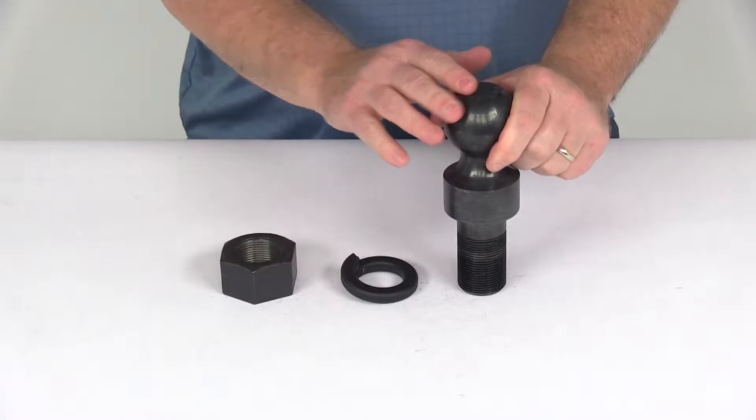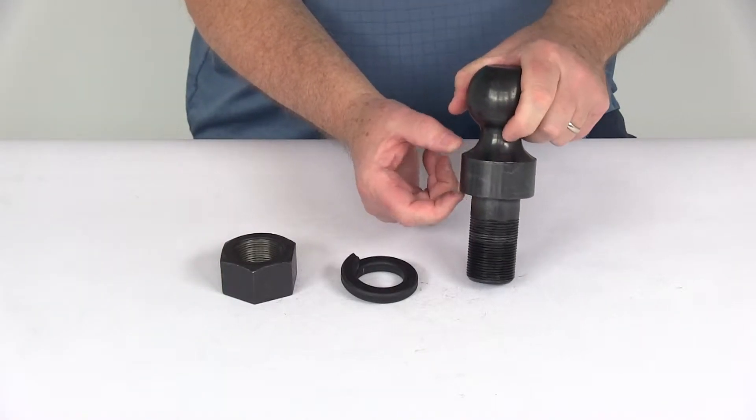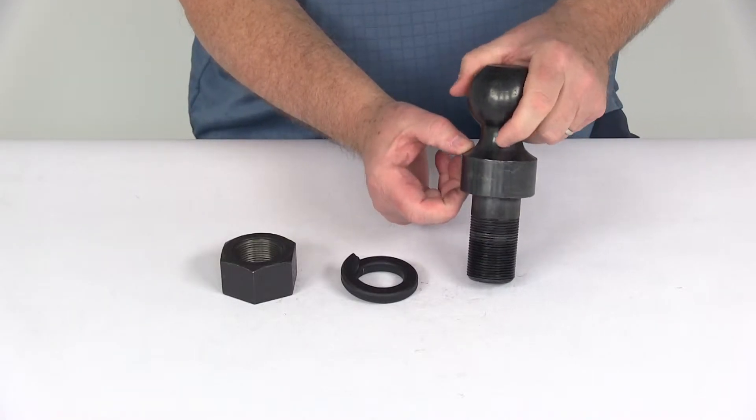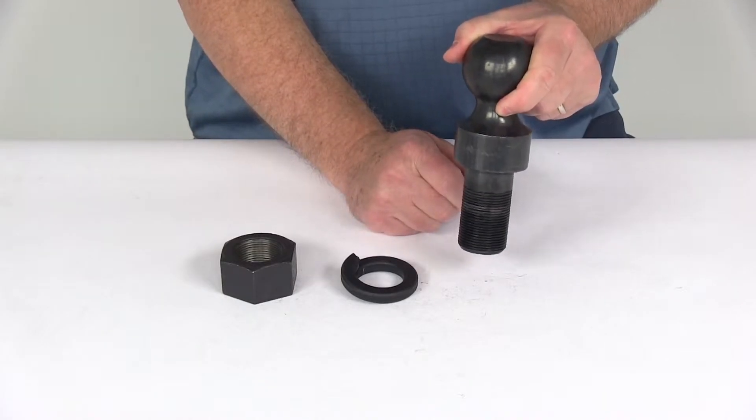This hitch ball provides a connection point for your trailer's coupler. It has a built-in rise that lets you easily match the ball to your trailer height. The ball will sit about an extra inch above the ball mount platform when installed.